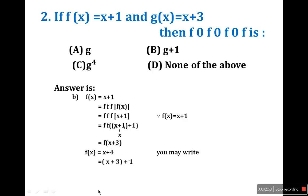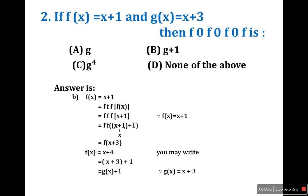Now write x+4 as x+3+1. Since g(x) = x+3, that is g(x) + 1, which equals g+1. So the answer is B, not D. Be careful while solving these types of questions.